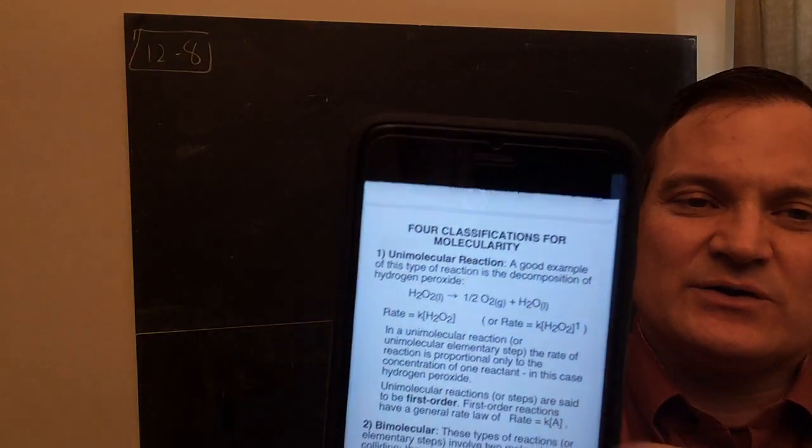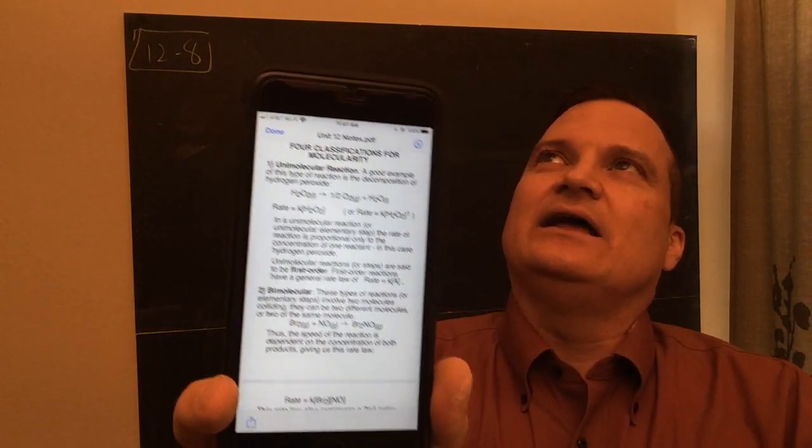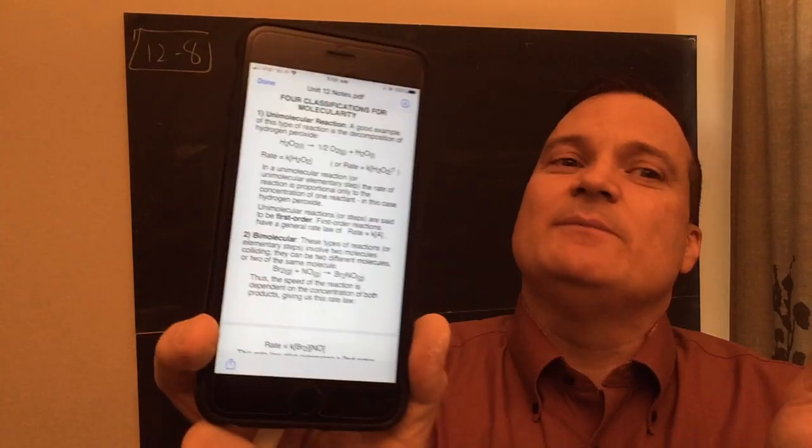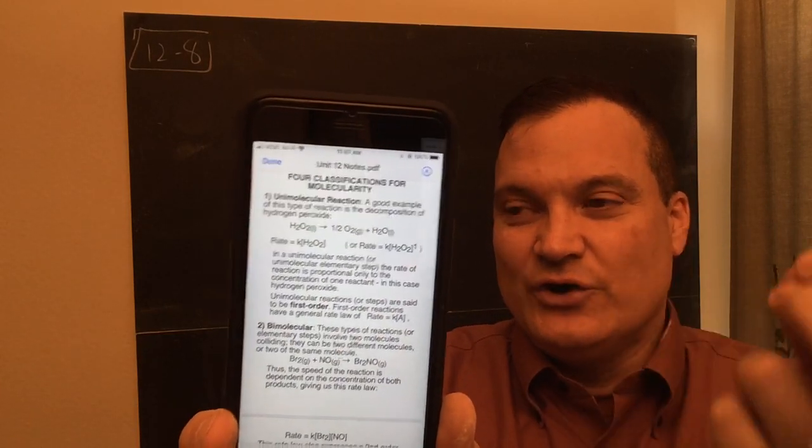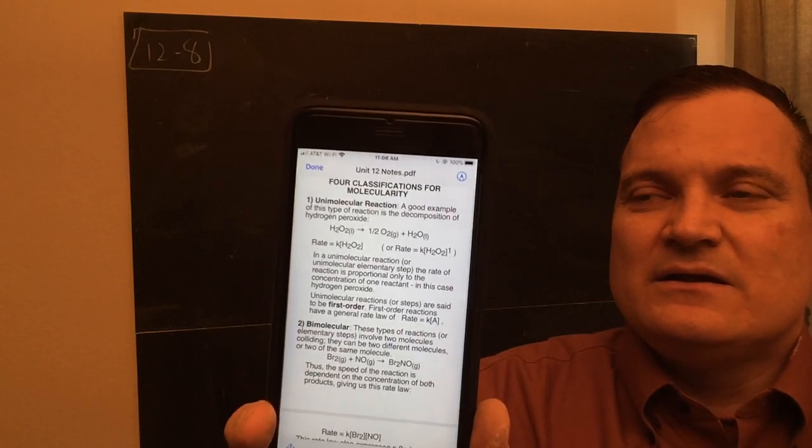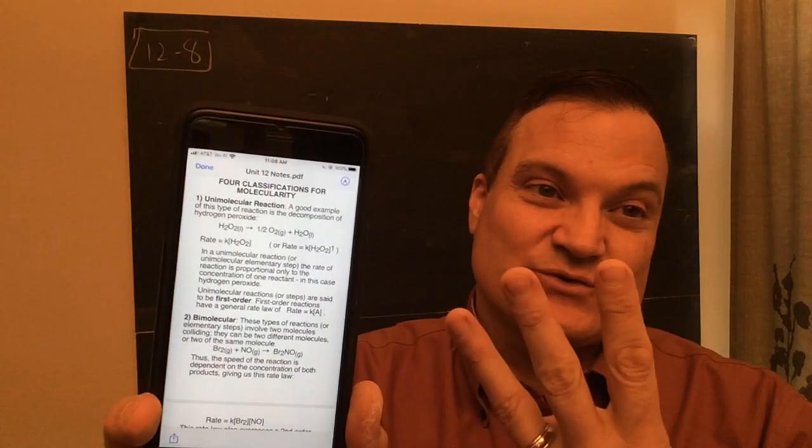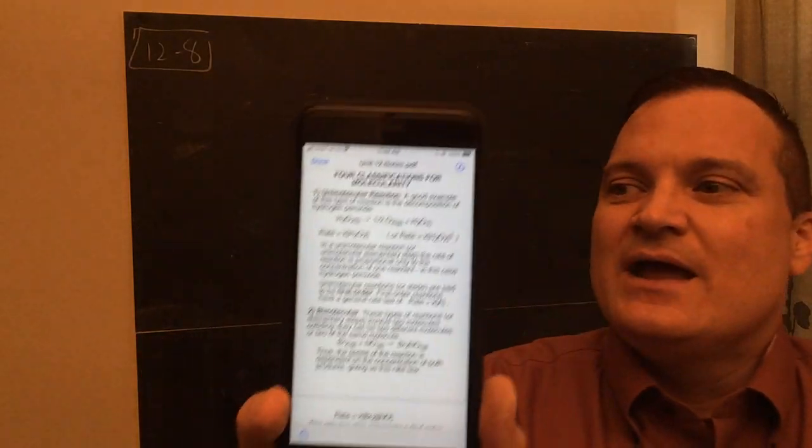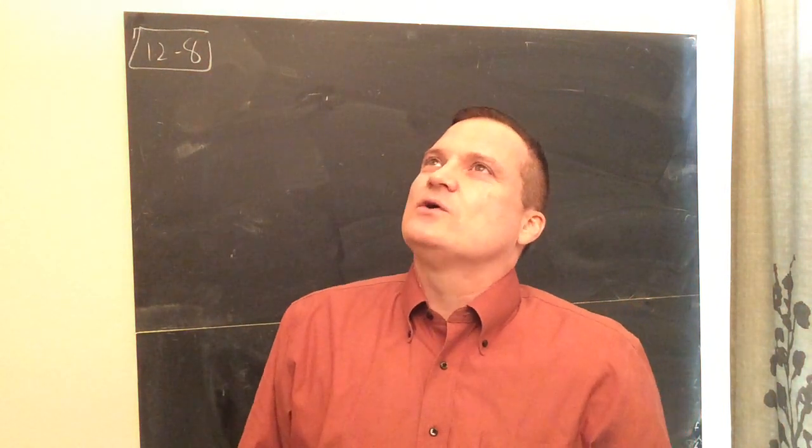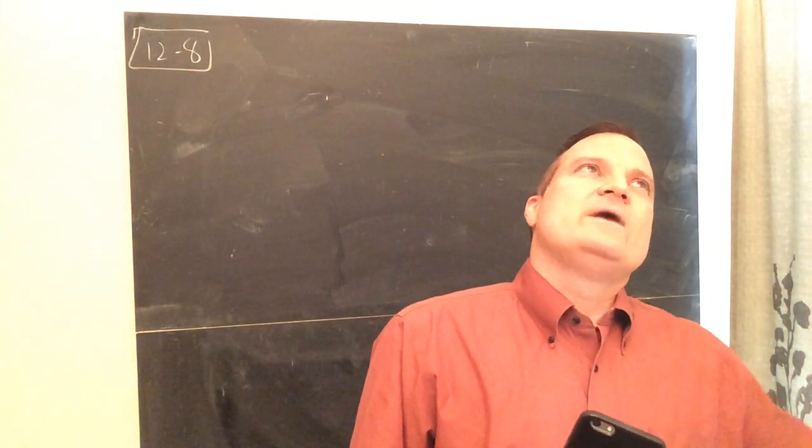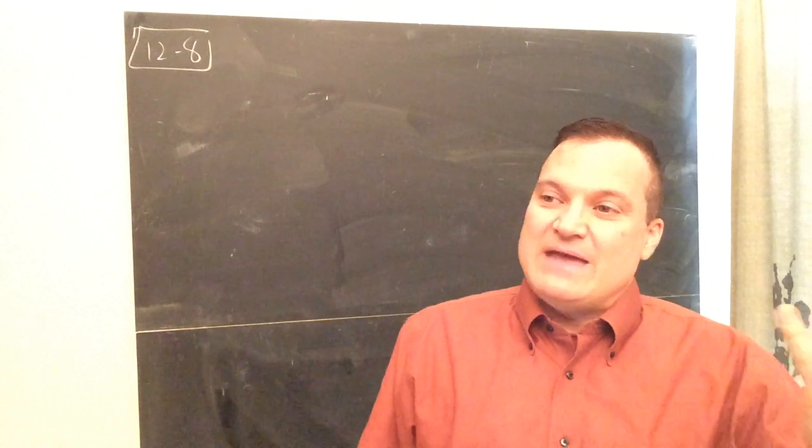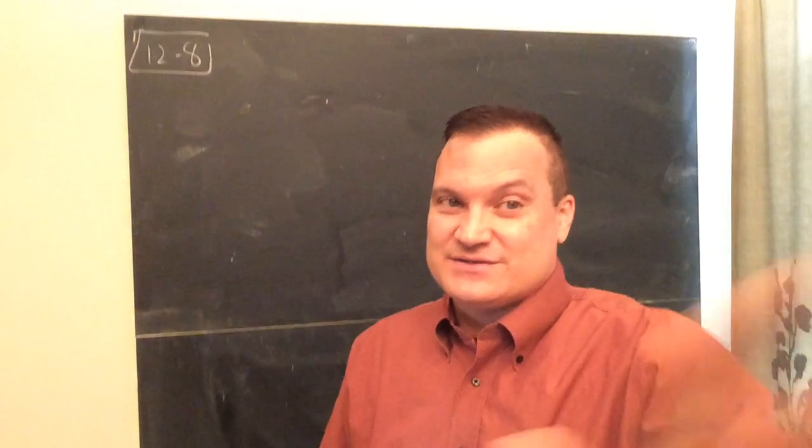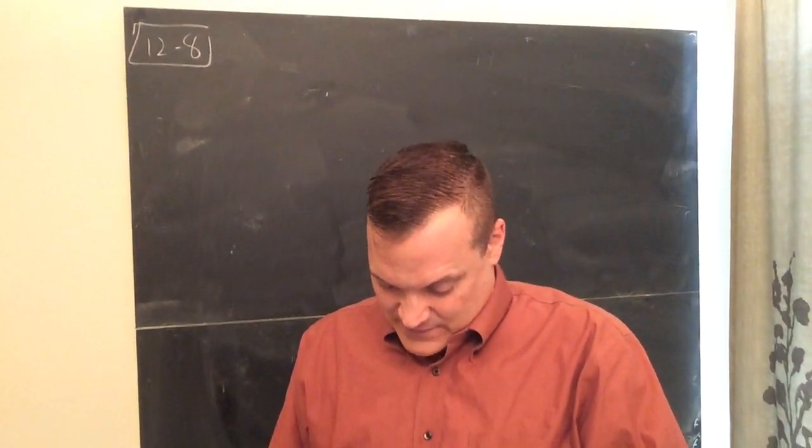Molecularity talks about how many particles have to combine in order for the step to occur. If two molecules collide, that would be called bimolecular. If only one molecule does it, it would be unimolecular. Termolecular is when there are three, but that's kind of a rare one.